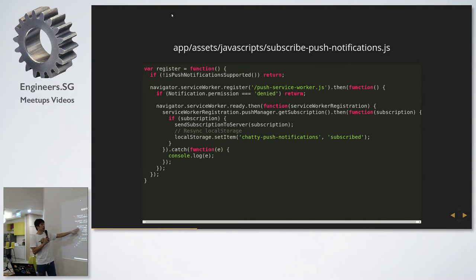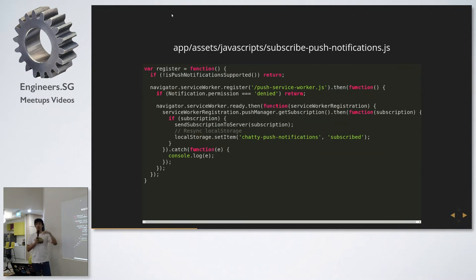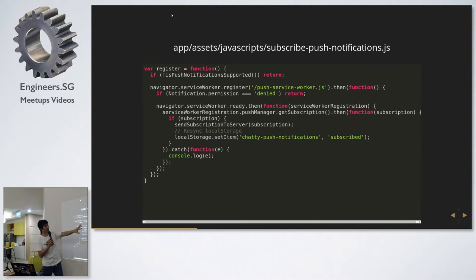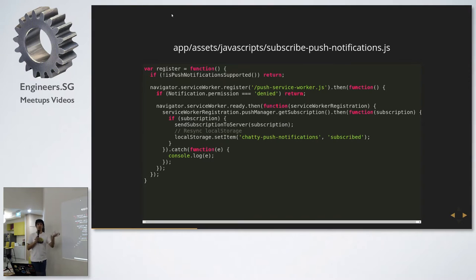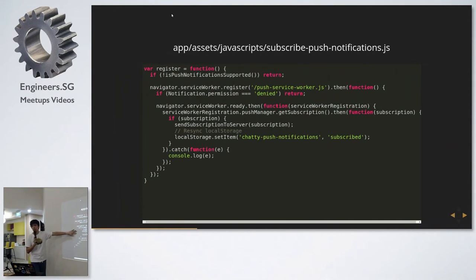Once your service worker is ready, you can fetch a service worker registration. From the registration there's a push manager object, and you can get your current subscription. If there's a subscription available, you have a promise and call a then function. This subscription object contains all the payload — and it has to be sent to the server.